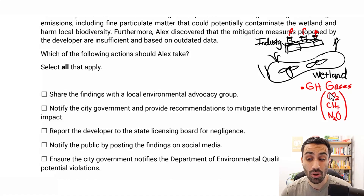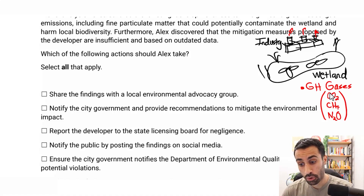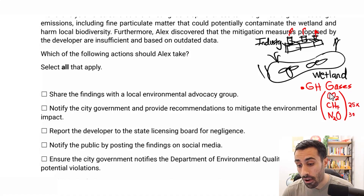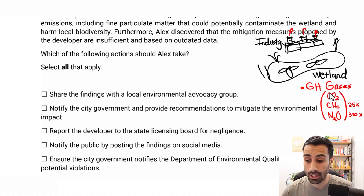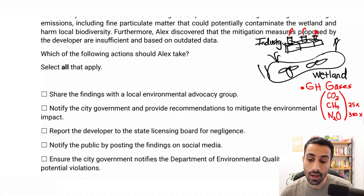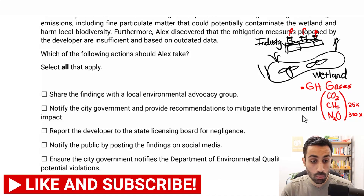Methane is also common from industry but not as common as CO2. The problem with methane and nitrous oxide is they are far more potent: methane is 25 times more effective at trapping heat than CO2, and nitrous oxide is 300 times more effective. However, methane doesn't stay long in the atmosphere, whereas CO2 stays for centuries. Those are the big three greenhouse gases.